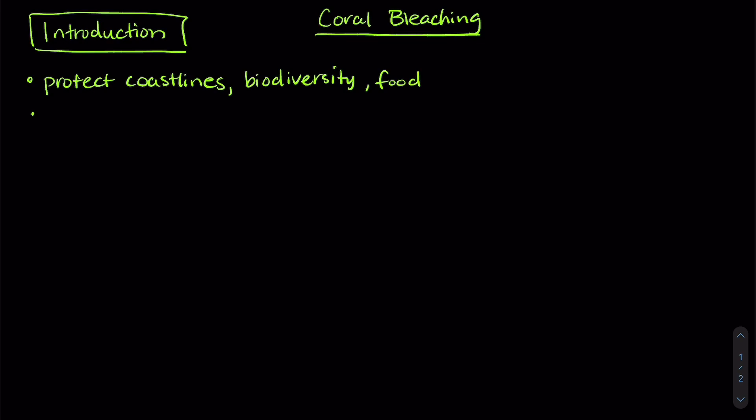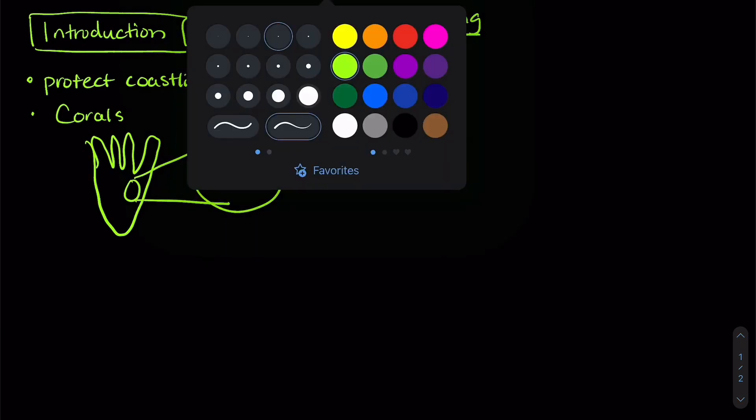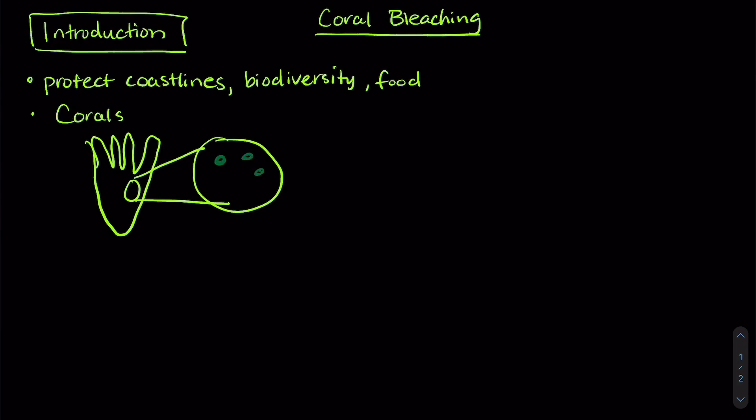So corals are actually really cool animals. Here's my interpretation of a coral. And let's do a little blow up over here. So within a coral there are single-celled organisms that photosynthesize, so little algae. And they do photosynthesis. So just as a review, photosynthesis is when an organism takes energy from sunlight and turns it into sugars. And they do this with the help of pigments, and the most common one that you're probably familiar with is chlorophyll.